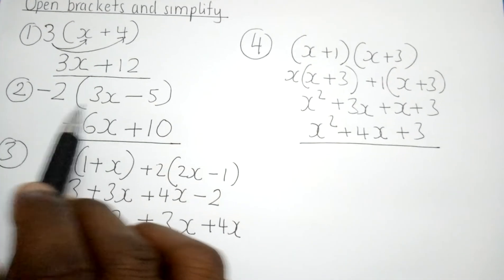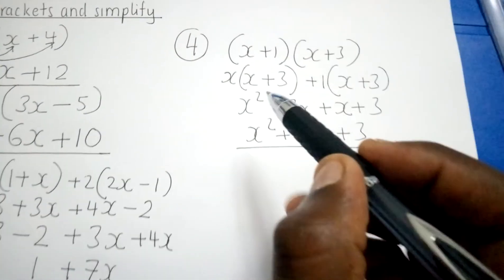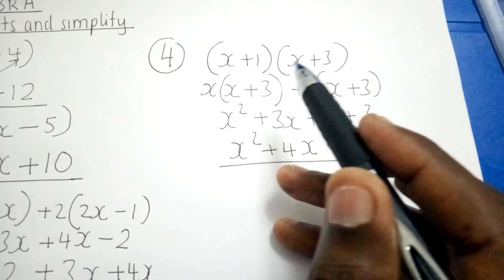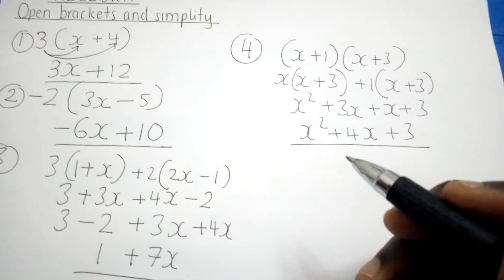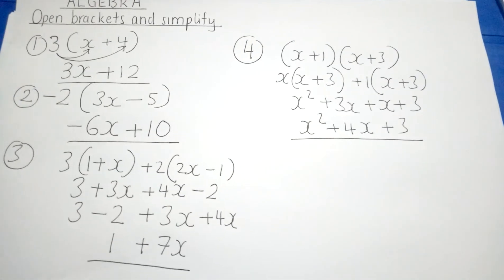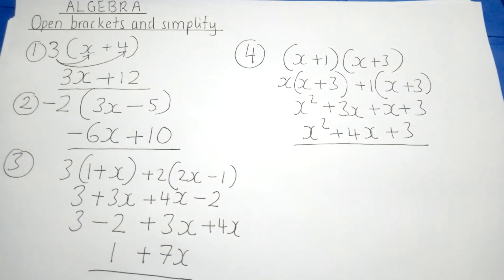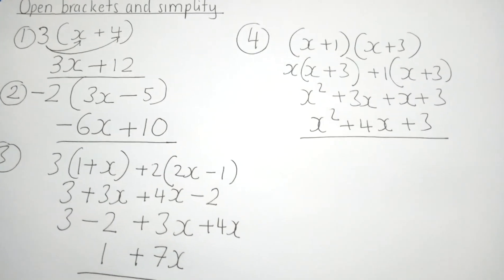That's how we open brackets and simplify. As we said, we looked at opening one bracket, then we saw how we open with a negative, after we saw when you have two brackets with numbers outside, and finally we have seen when two brackets are multiplying each other. This is how we simply open brackets and we simplify. Thank you for watching, my name is Mr. Ishengoma.